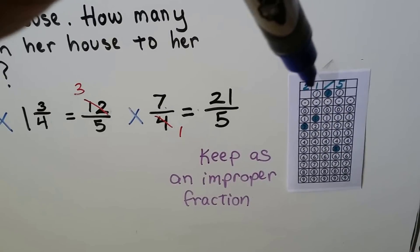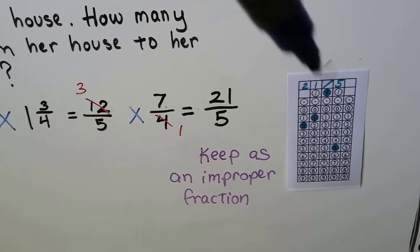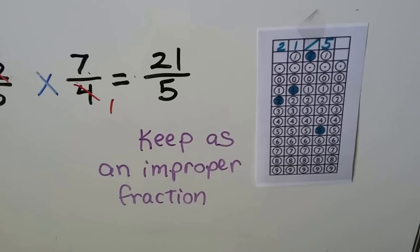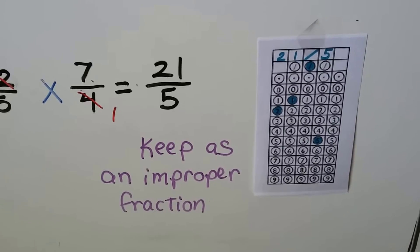We keep this as an improper fraction. It's reduced as far as we can go, we know from the cross-cancelling. We write a 2, a 1, a slash, and a 5, and fill in the correct circles for that, including the slash, and that's our answer.